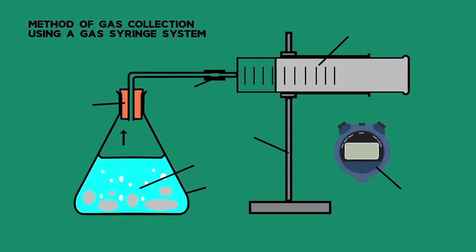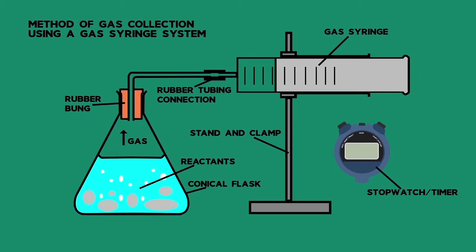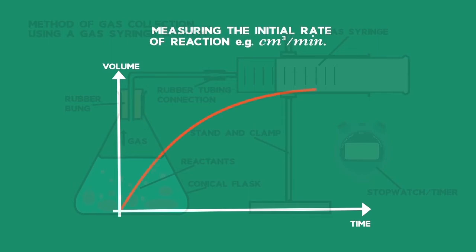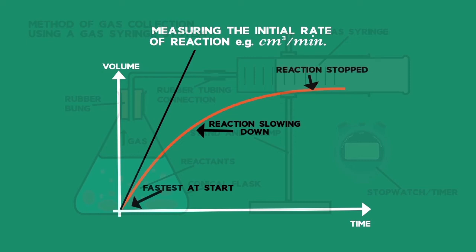Each can be looked at experimentally and the results can be plotted on a graph. For example, if we collected the gas from the reaction between a metal and an acid, we can plot the volume of the gas versus time on a graph. The steepness of the slope is an indication of the rate of the reaction.